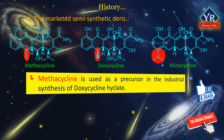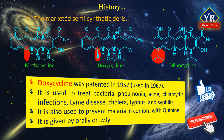Methacycline is used as a precursor in the industrial synthesis of doxycycline hyclate. Doxycycline was patented in 1957 and came into commercial use in 1967. The absence of a hydroxyl group at C6 of doxycycline prevents the formation of a nephrotoxic compound. Doxycycline is used to treat bacterial pneumonia, acne, chlamydia infections, Lyme disease, cholera, typhus, and syphilis. It is also used to prevent malaria in combination with quinine.